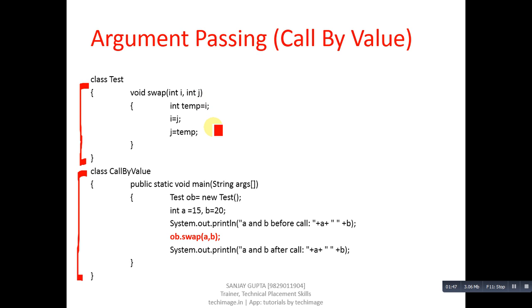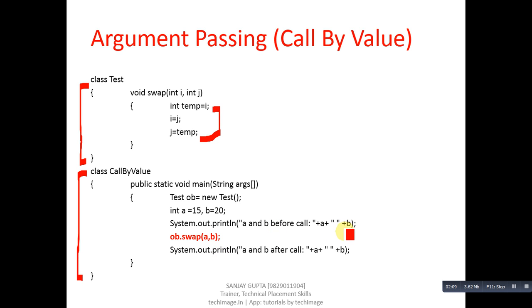In call by value, as you may have studied in C and C++, we pass values of actual arguments into formal parameters. When we change the values of these formal parameters, the actual arguments do not change. So in this program, a and b will print 15 and 20 before the swap call, and still print 15 and 20 after — no effect on a and b.